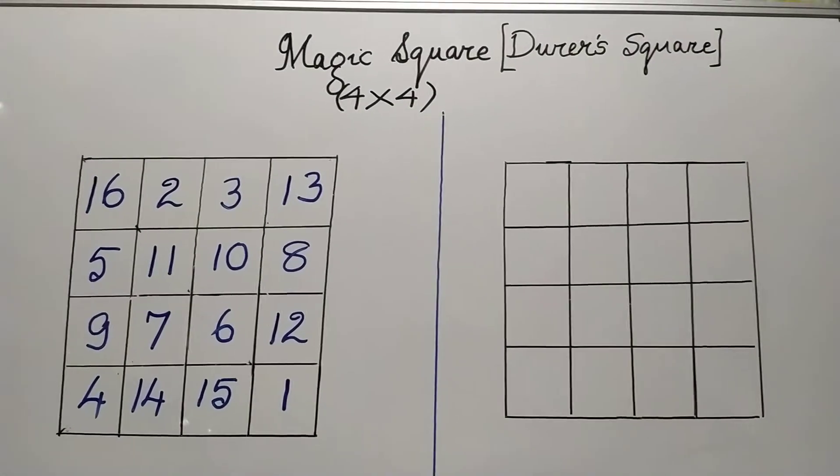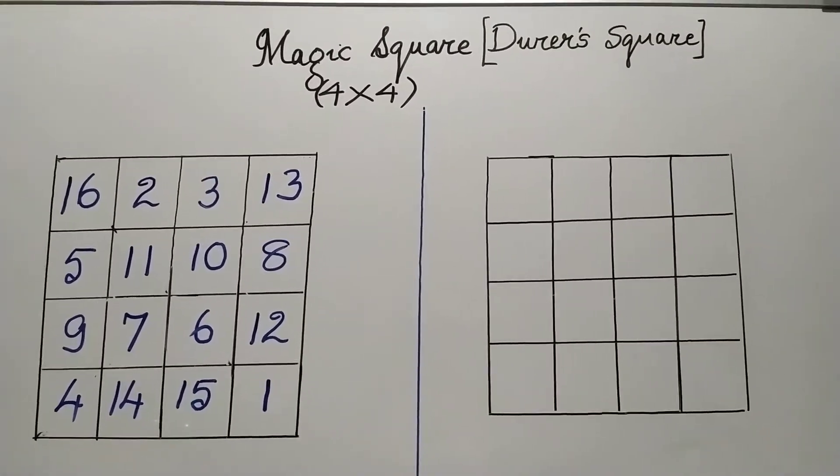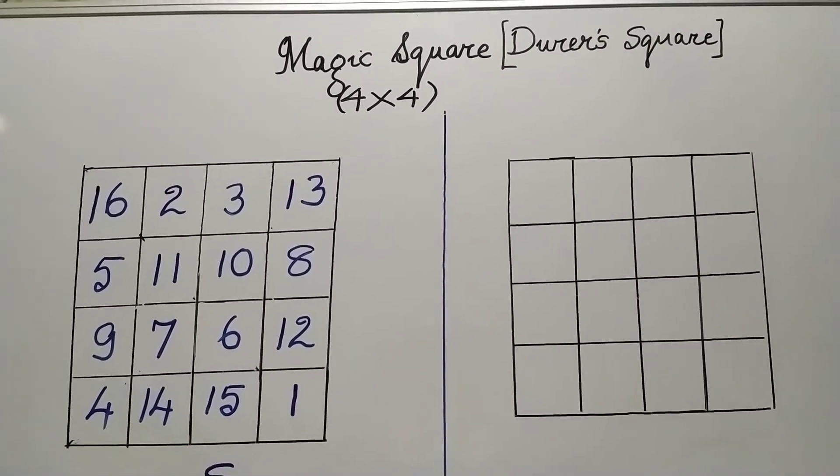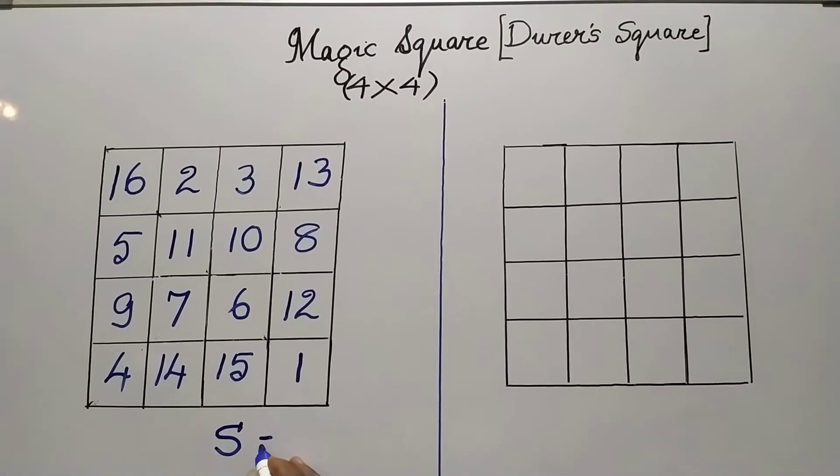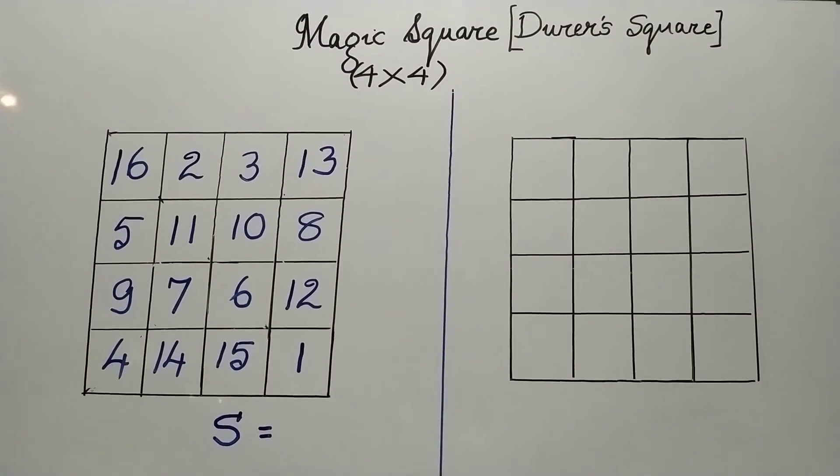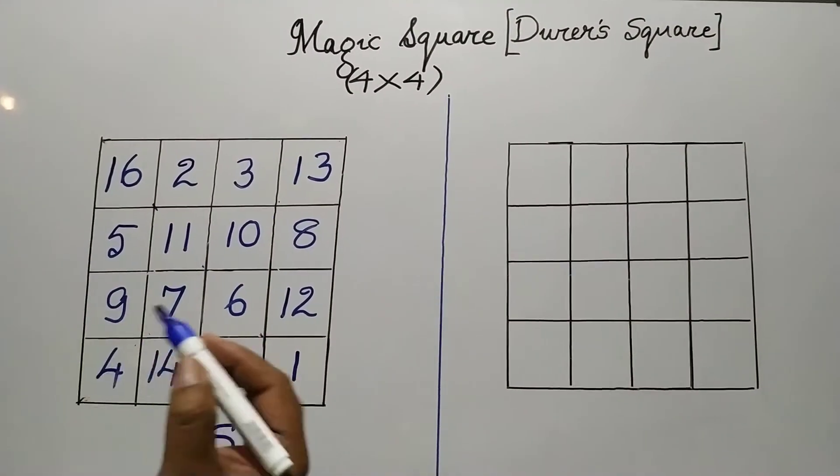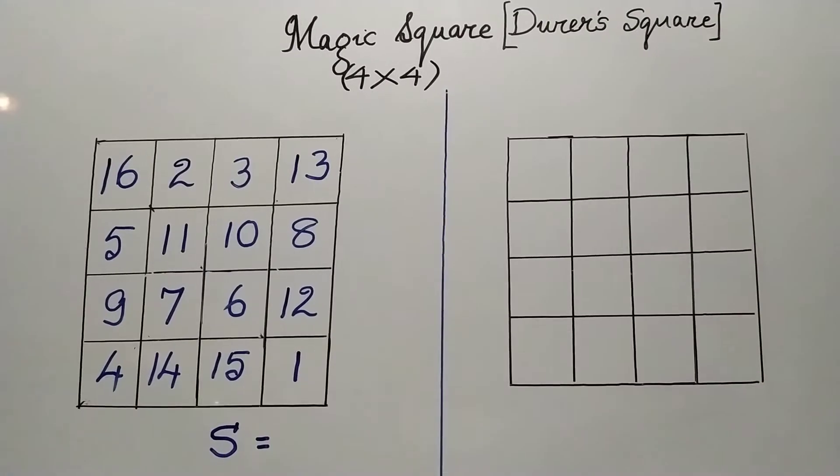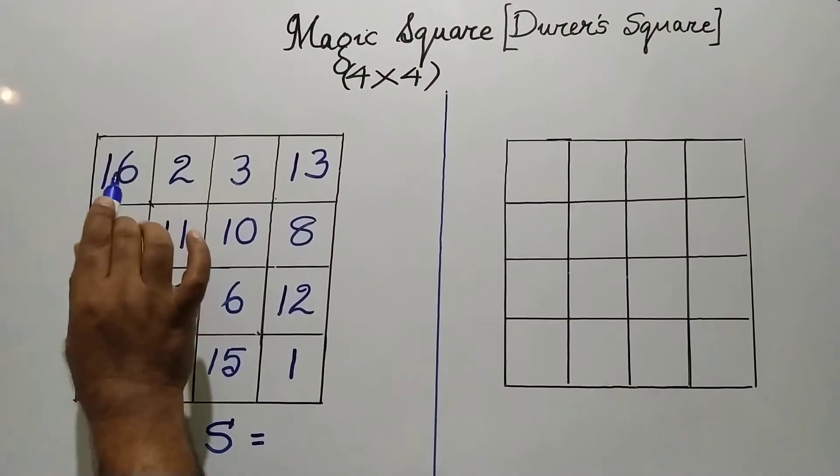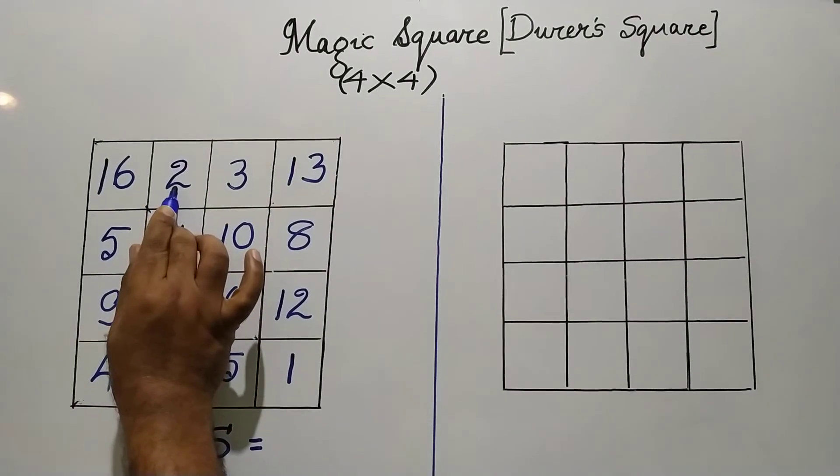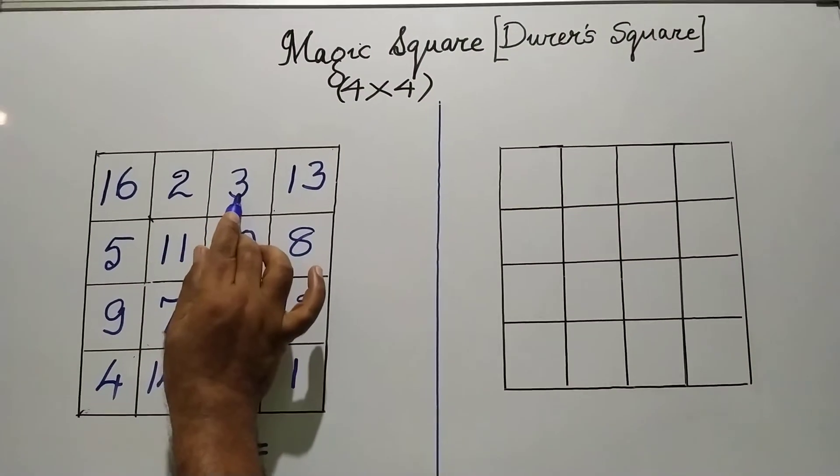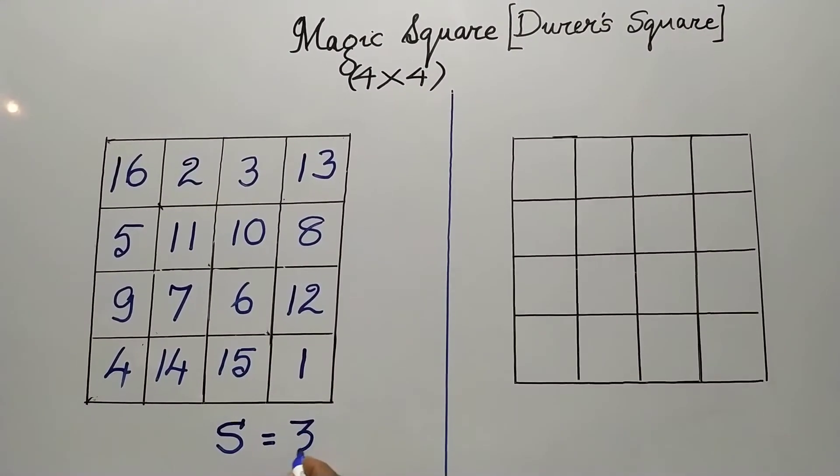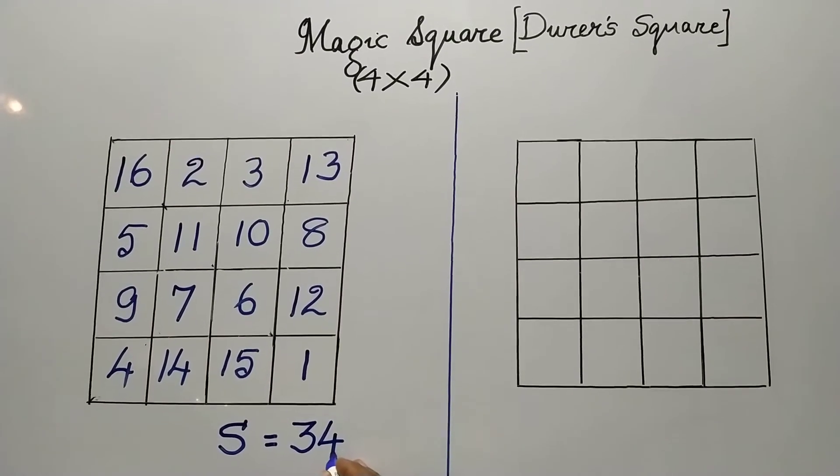So we have completed the 4 by 4 magic square. We will just find out what will be the magic sum. The magic sum should remain the same in whichever row or whichever column, whichever diagonal it is added. I will add the first row. 16 plus 2, 18, 18 plus 3, 21, 21 plus 13 will be 34. So the magic sum should be 34.